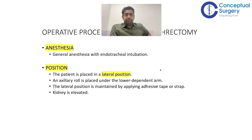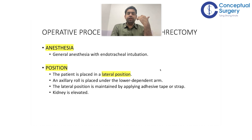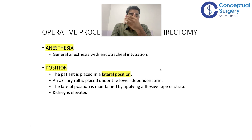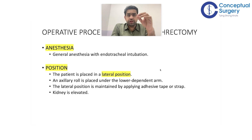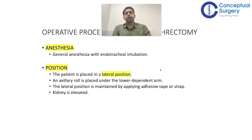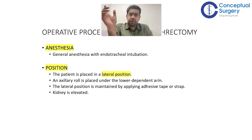For patient positioning, let's assume you have to operate on the right kidney — you want the right side up. It is going to be a left lateral decubitus position. In the left lateral decubitus position, the right side is up, and that is the position given for a right nephrectomy. In the left lateral decubitus position, the left side is down and the right side is up.